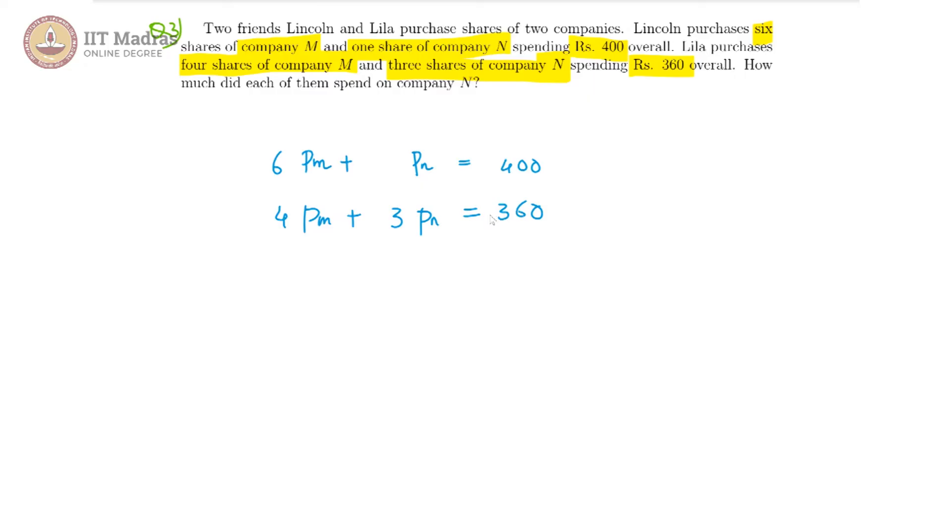How much did each of them spend on N? So we need to know what is PN and 3 PN, that is what we are interested in. To find the values of PM and PN, we will require to solve these two linear equations. However, we only require to find PN because the question is only pertaining to company N's shares.